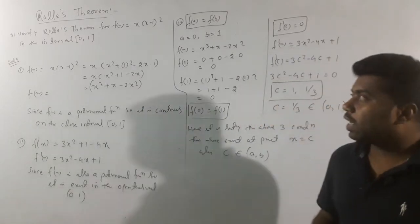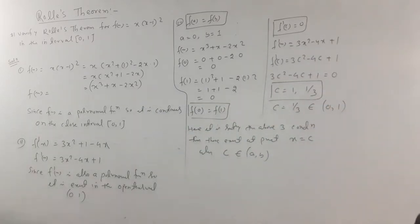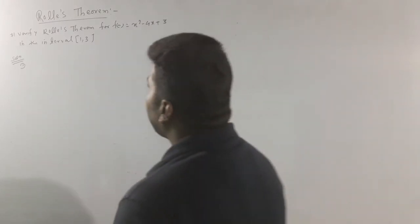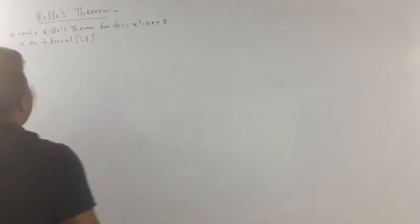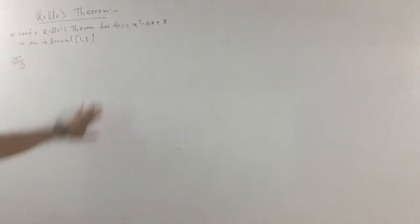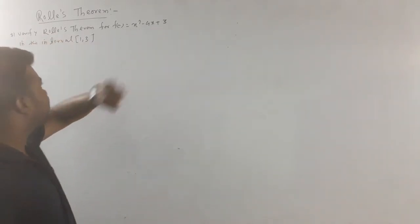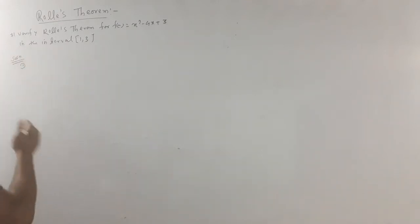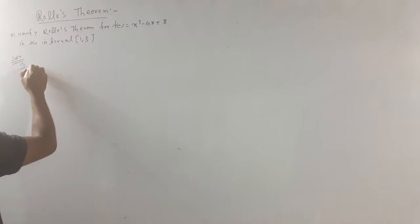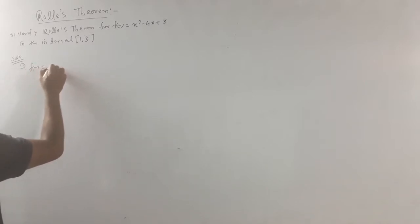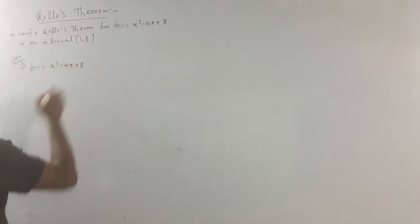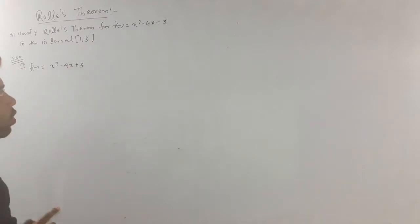I will ask you a question, student. Verify Rolle's theorem for f of x equal to x squared minus 4x plus 3 in the interval 1 to 3. Same steps we follow. Here f of x equals x squared minus 4x plus 3.